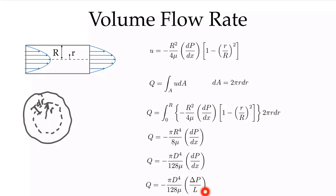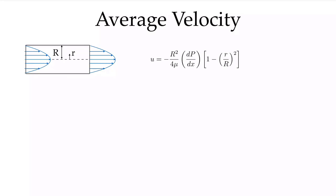Over some length of pipe L, we can change dp/dx into Δp/L — the difference in pressure between inlet and outlet — to respect the definition of delta as p2 minus p1. Once we have the volume flow rate, we can very easily calculate the average velocity. The average velocity is simply the volume flow rate over the area. The area of the circular cross-section is πR², so dividing Q by πR² gives us the average velocity as R² times dp/dx divided by 8μ.